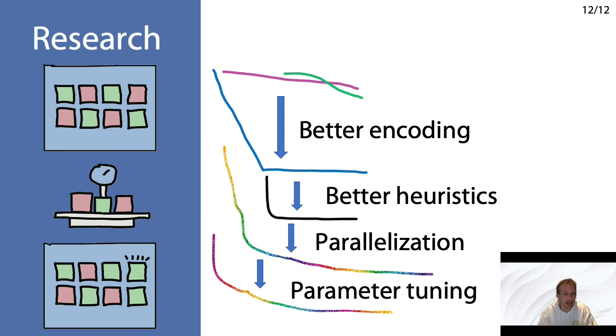Parallelization also allows you to do some clever parameter tuning. If you have many machines or many tasks working on the same problem, then you can have all of these different instances running with different parameters, and you can sort of exchange between them which parameters work well and which parameters don't work so well.